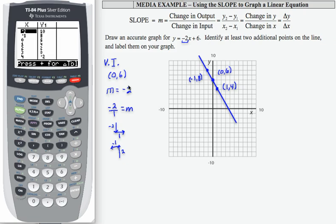So we found negative 1, 8, which indeed is here, negative 1, 8, and 0, 6 we already had, and we found 1, 4.